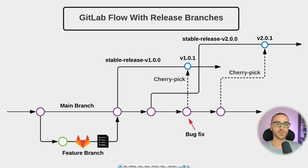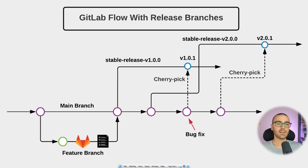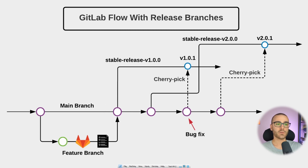In this version, you still have the main branch and feature branches branching off and merging back into main. But you don't create a release branch until you are absolutely ready to cut a release. You want to branch off into a release branch as late as possible so that you can minimize the number of bug fixes and hot fixes applied after cutting the release. After all the features for the next release have been merged into the main branch, you branch off into a release branch and tag it with the version number.